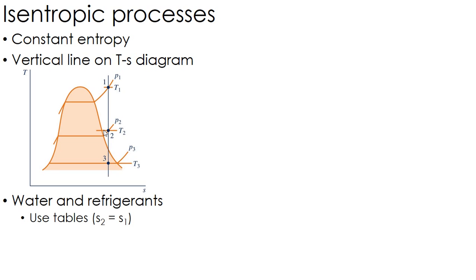To deal with isentropic processes, we're going to look substance by substance. For water and refrigerants, we have tables where we can look up the entropy directly for specific properties. If you've got a table, use it.